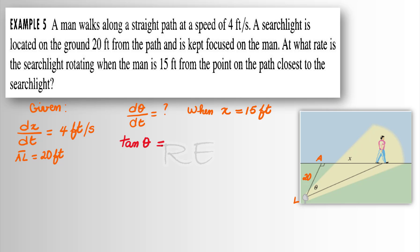Tangent θ, tangent angle θ will be equal to the opposite side, which is x, over the adjacent side, which is 20. Which means that 20 tan θ is equal to x.